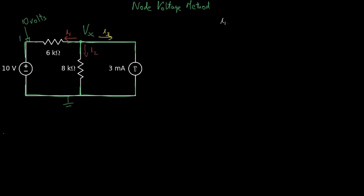The current law says that the sum of the currents flowing out of node X has to sum up to zero. What we're going to do is solve for each of those currents by considering Ohm's law or other considerations for each device.